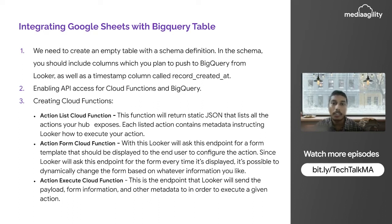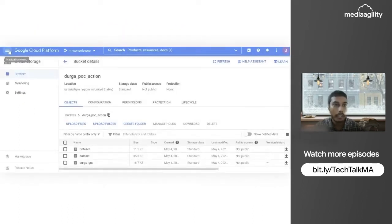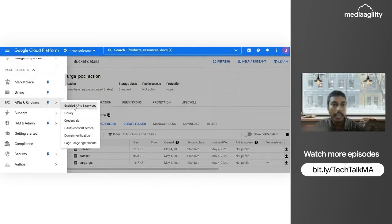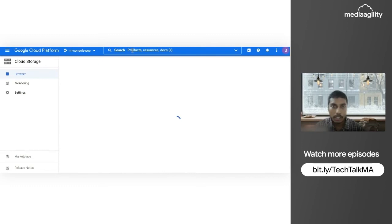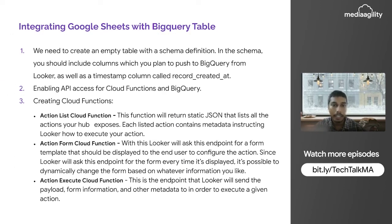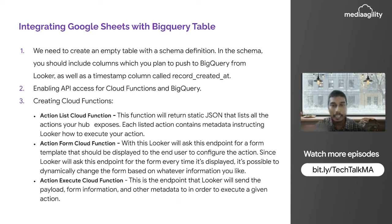The second step is to enable API access for Cloud Functions and BigQuery. Go to API and Services, then Enable APIs and Services, and enable the required Cloud Functions API and BigQuery API. Next, we need to create Cloud Functions. A cloud function is essentially a piece of code written in BigQuery that enables interaction with another service — in this case, Looker — to enable data transfer.